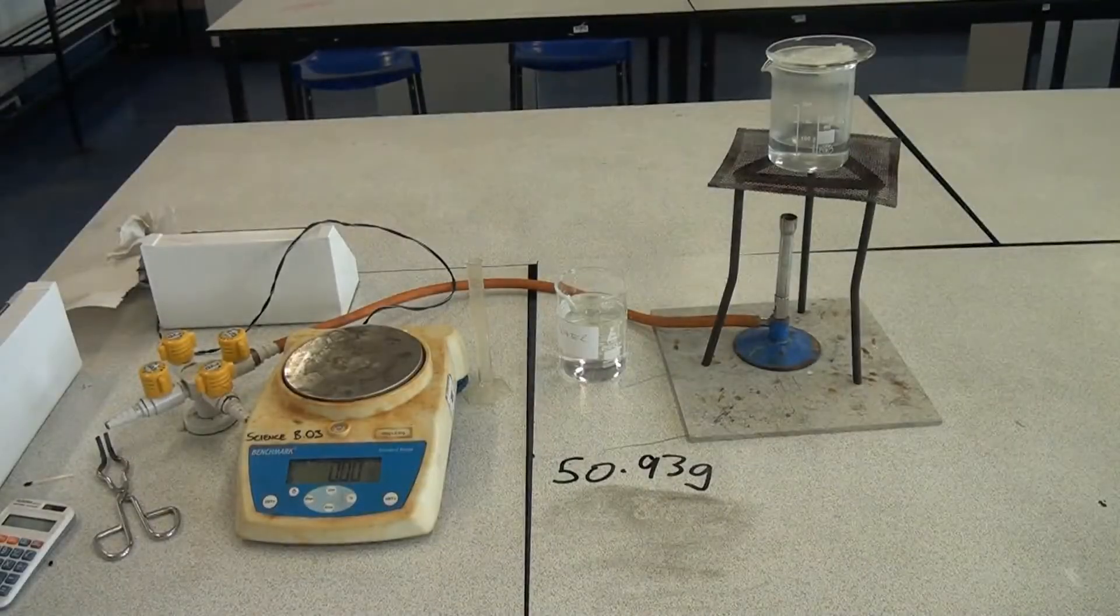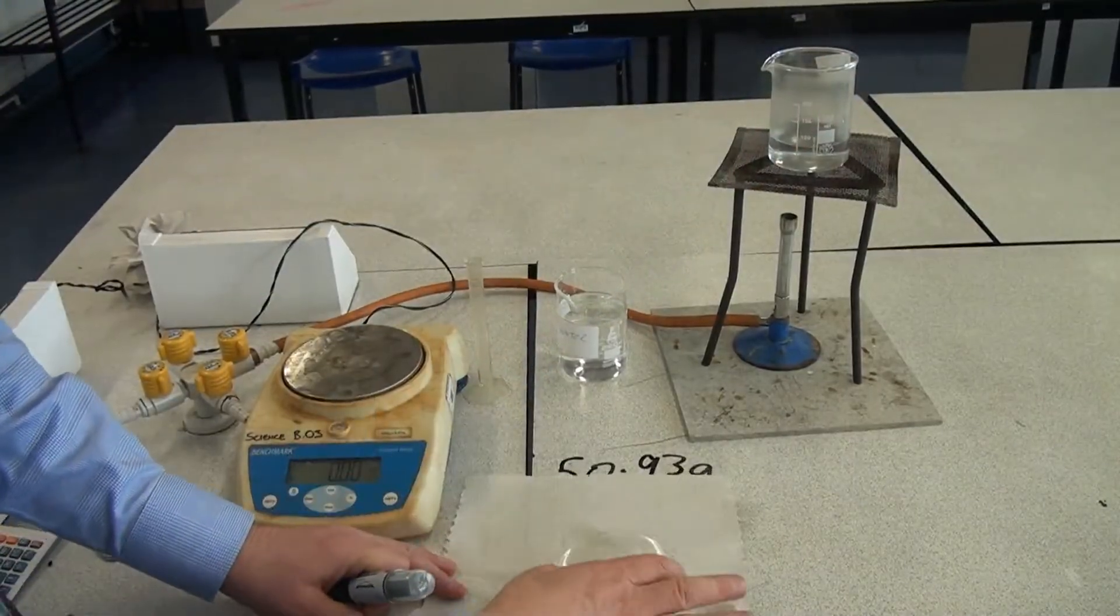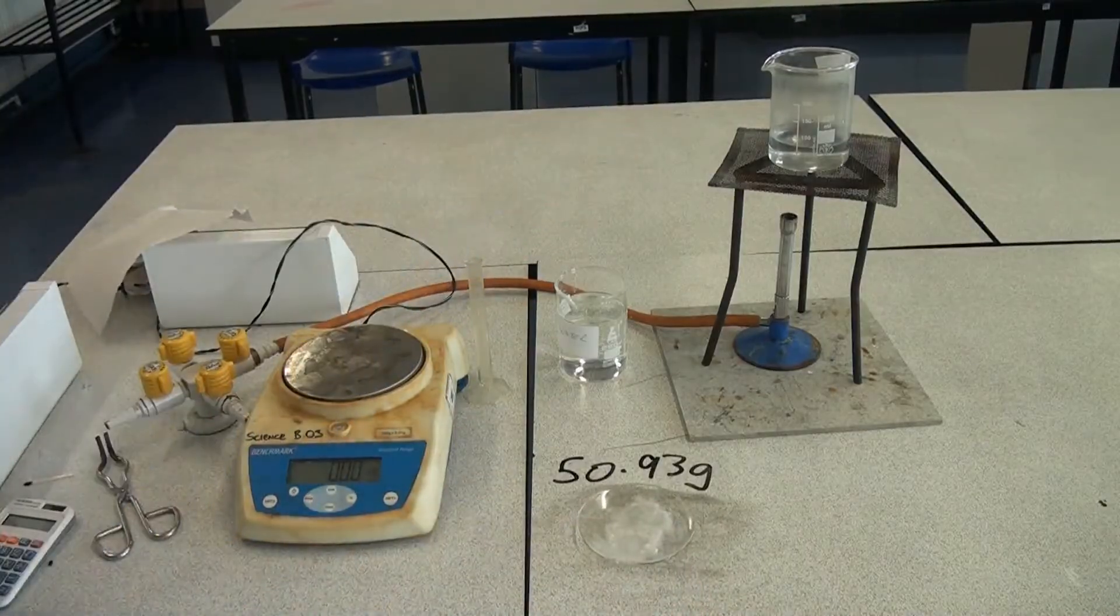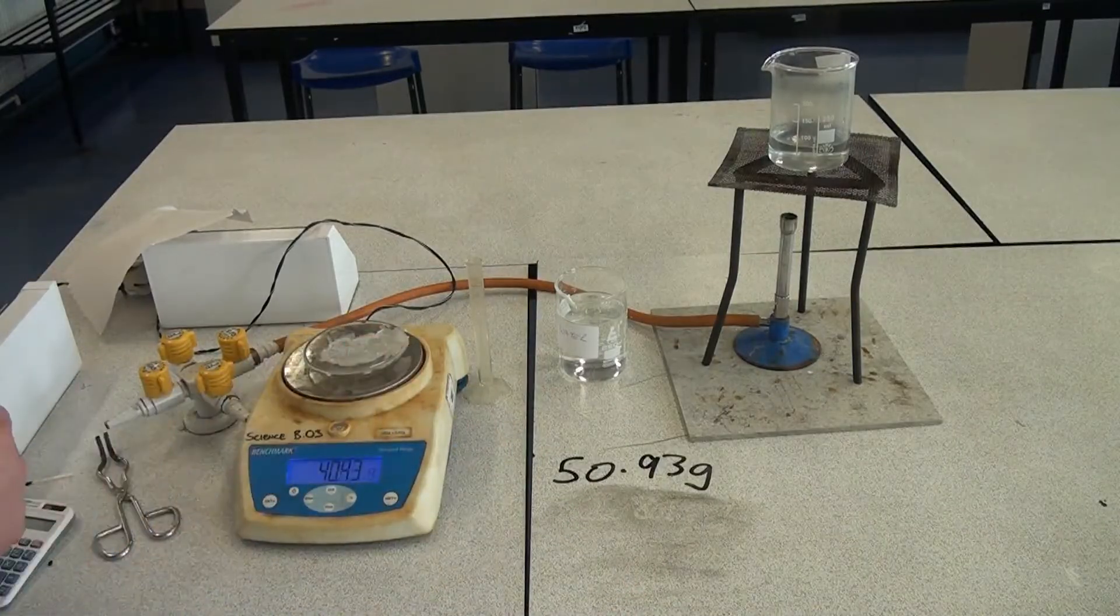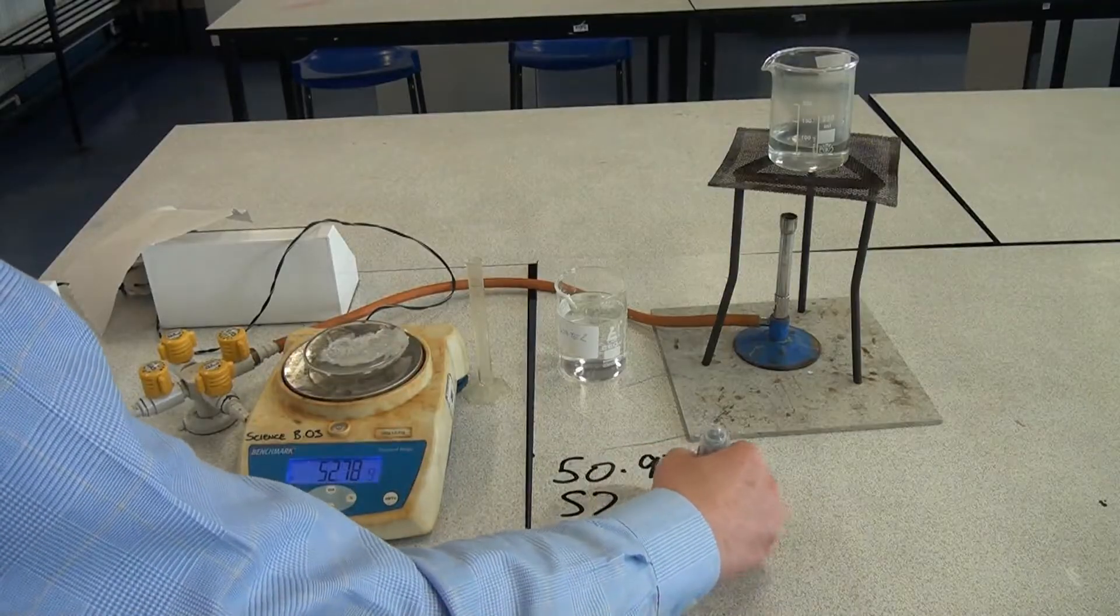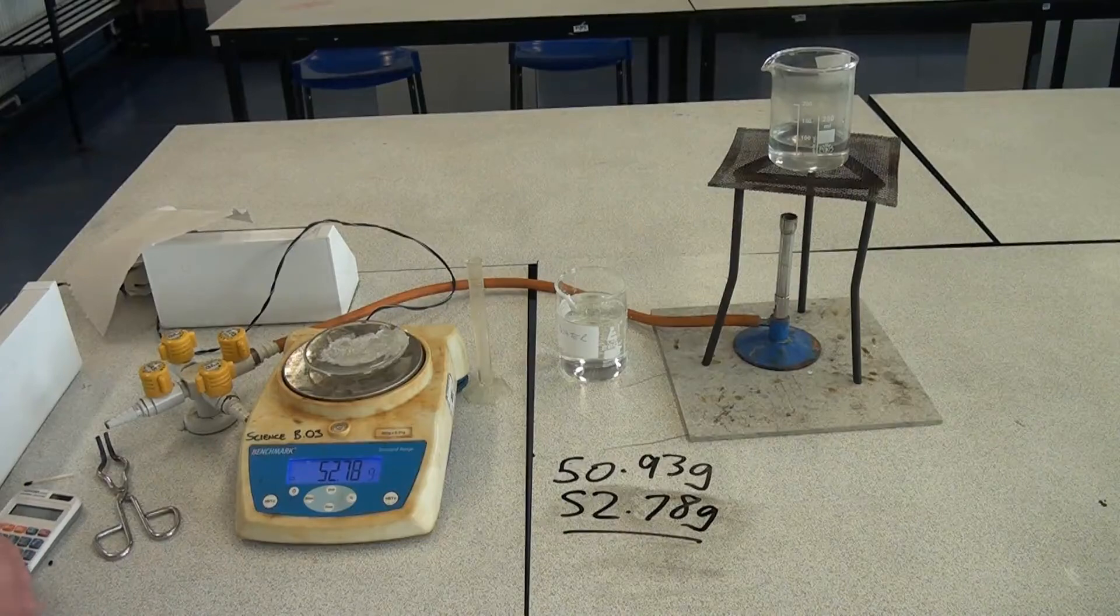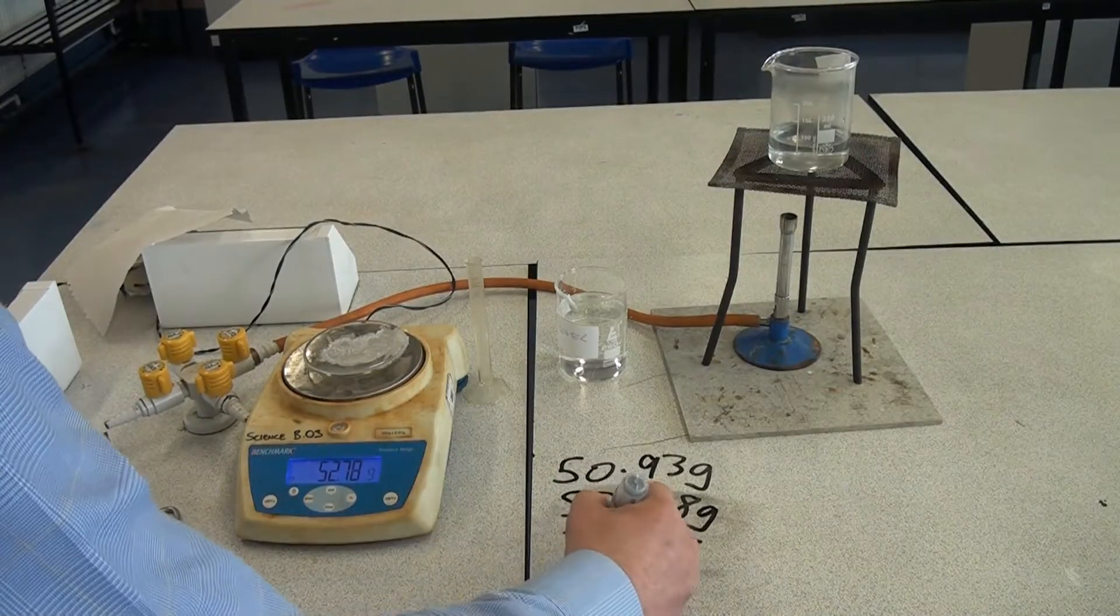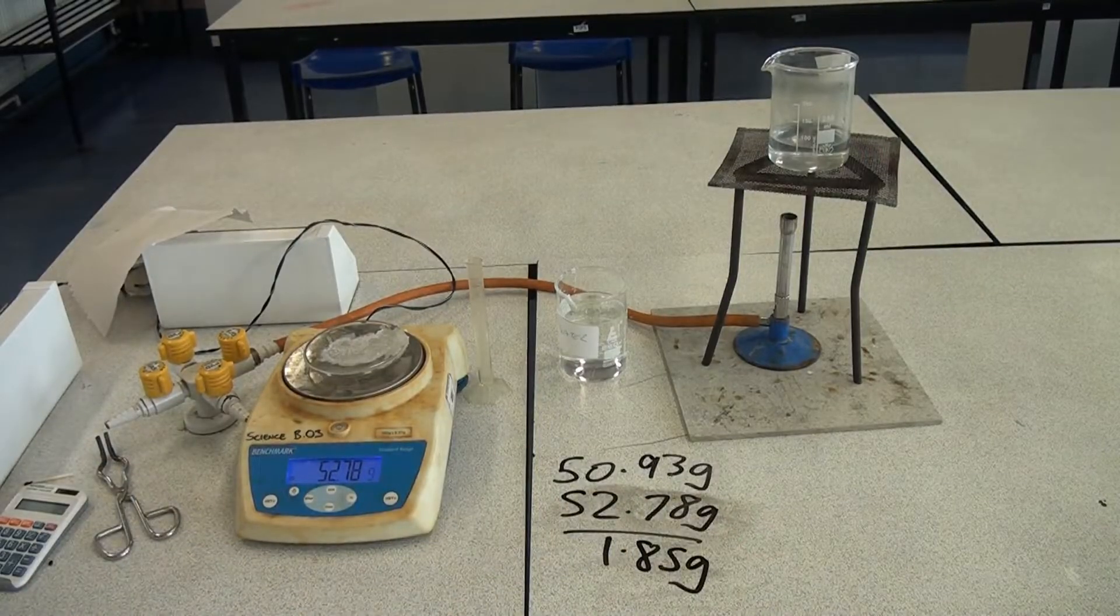Now that the watch glass has cooled, I'm going to take it off the water bath and it's important that we dry underneath the watch glass with a paper towel, just in case there's any condensation underneath there from the steam from the water bath. And if I re-weigh the watch glass, the mass should have gone up, which it has to 52.78 grams. So to find the mass of salt, I do 52.78 grams take away 50.93 grams, and that gives me 1.85 grams of salt in that 4 centimeters cubed sample of seawater.